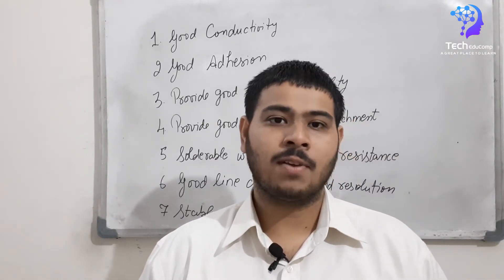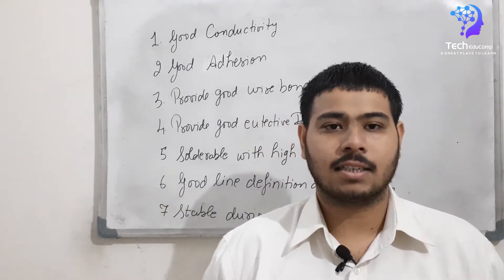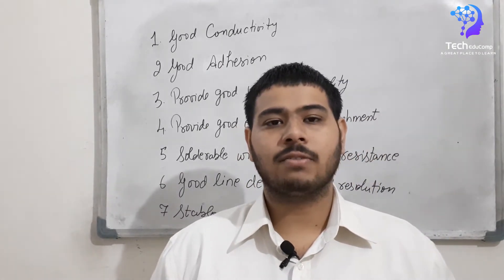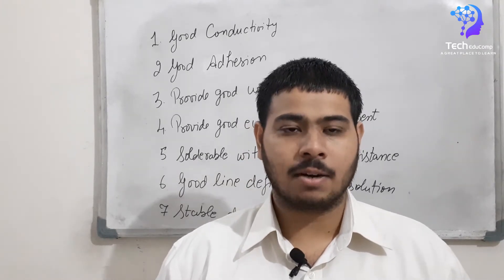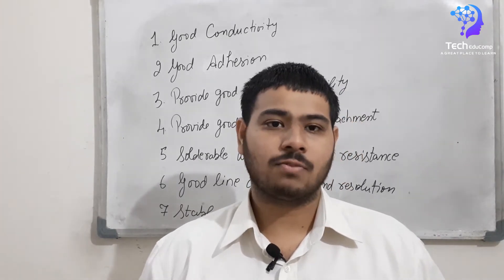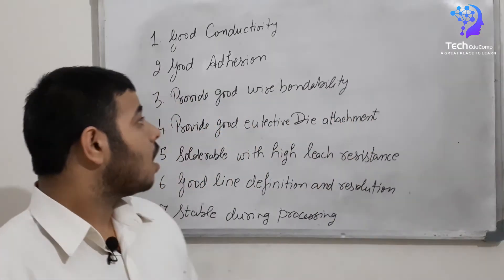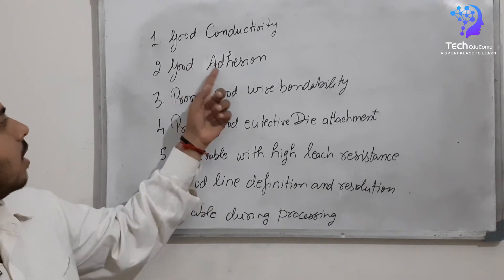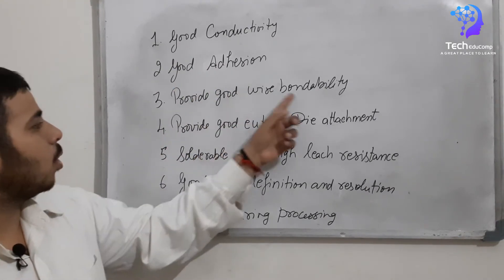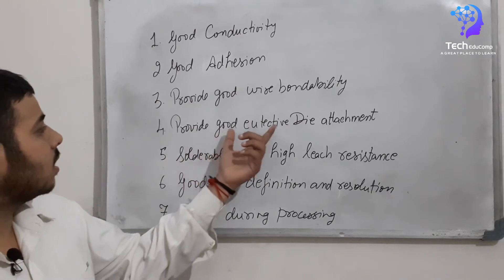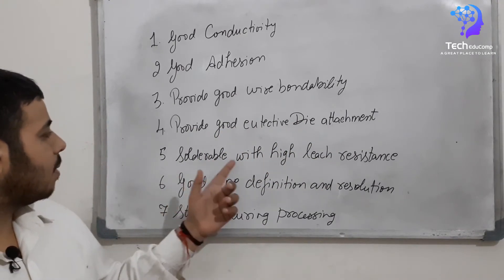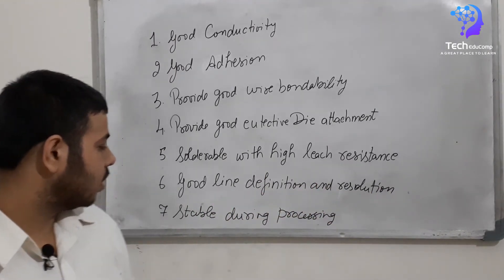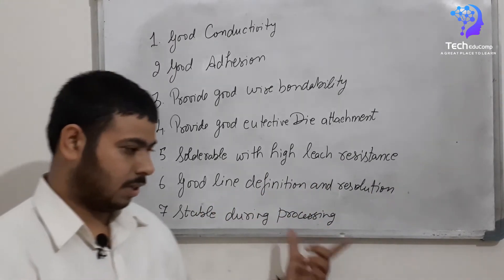Now let us talk about thick film conductors. These conductors are used for making interconnections between components, like terminations for resistors, attachment pads for dielectric components, and land pads for thick film conductors. A good conductor has the following properties: good conductivity, good adhesion, good wire bondability, good eutectic die attachment, solderable with high leach resistance, good line definition and resolution, and stable during the firing process.